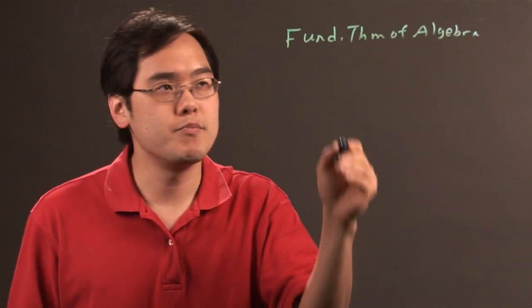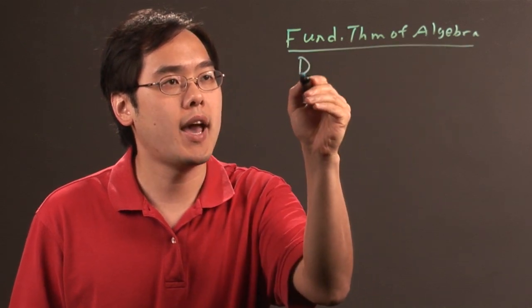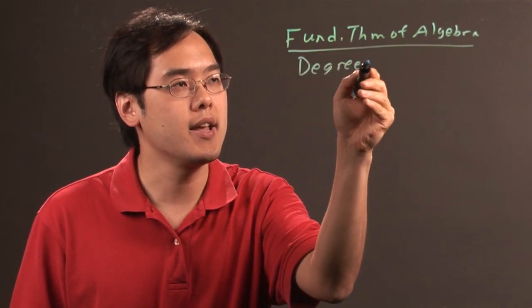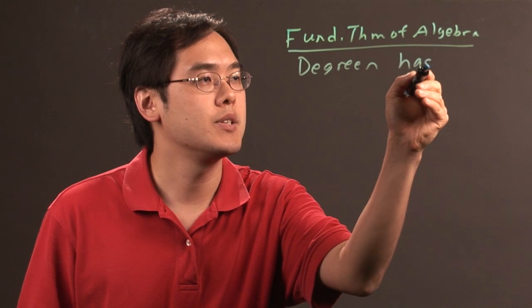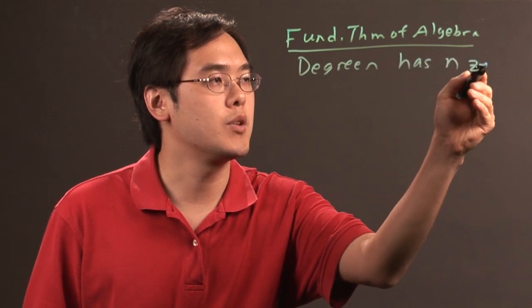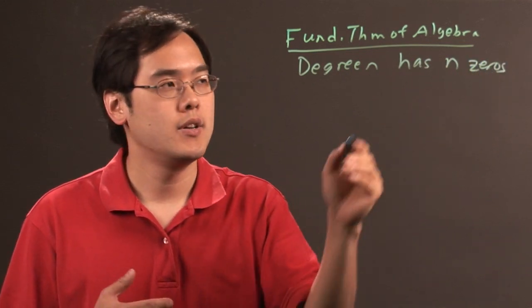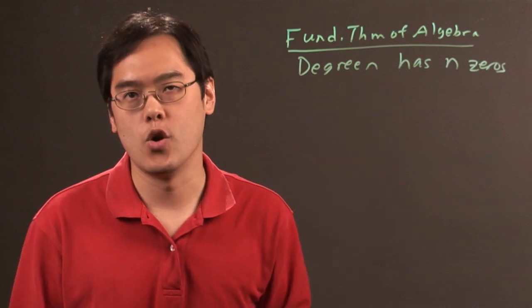What that tells you here is that a polynomial of degree n has n zeros. In other words, the number of solutions will match the overall degree.